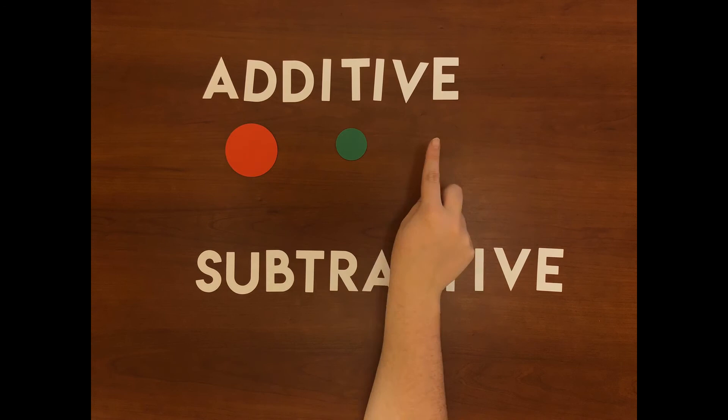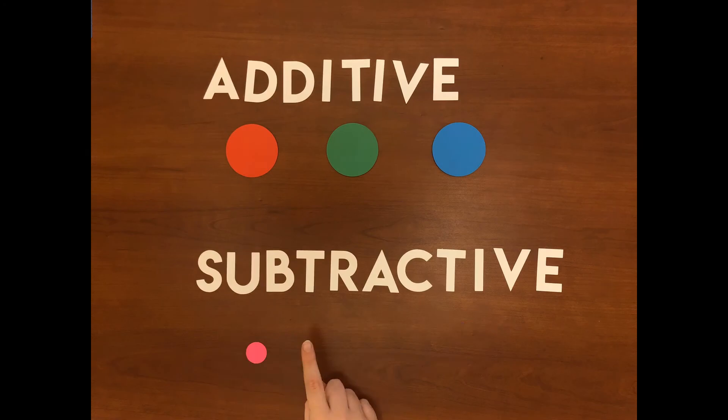There are two types of color primaries. Additive and subtractive. In additive you have red, green, and blue. In subtractive you have magenta, yellow, and cyan.